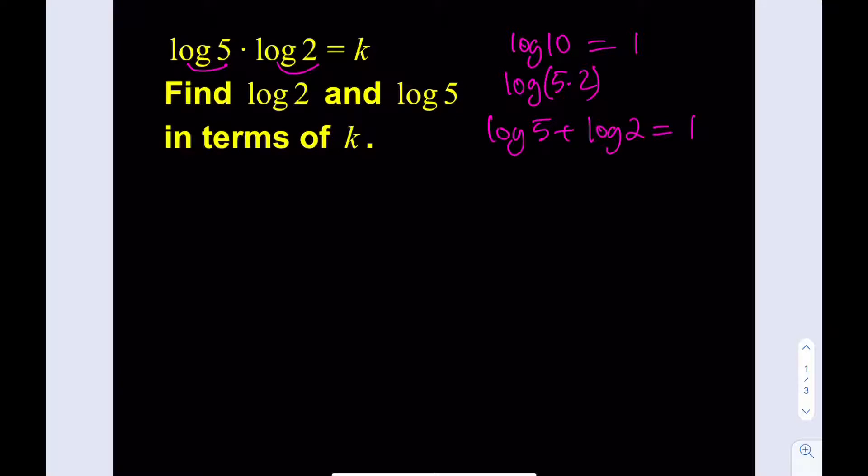What I can do is write log 5 as 1 minus log 2, right? Then I can substitute that here. That gives me 1 minus log 2 multiplied by log 2 equals k.